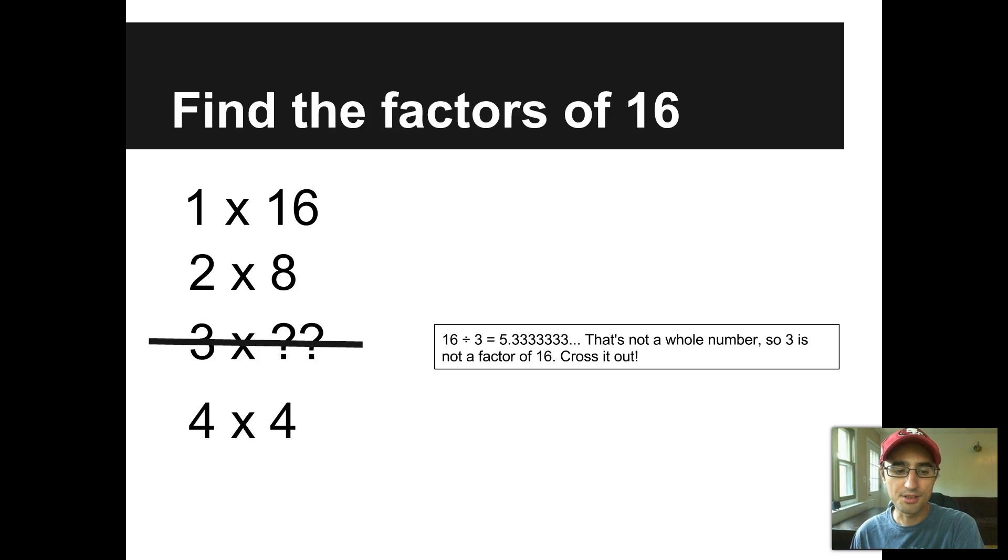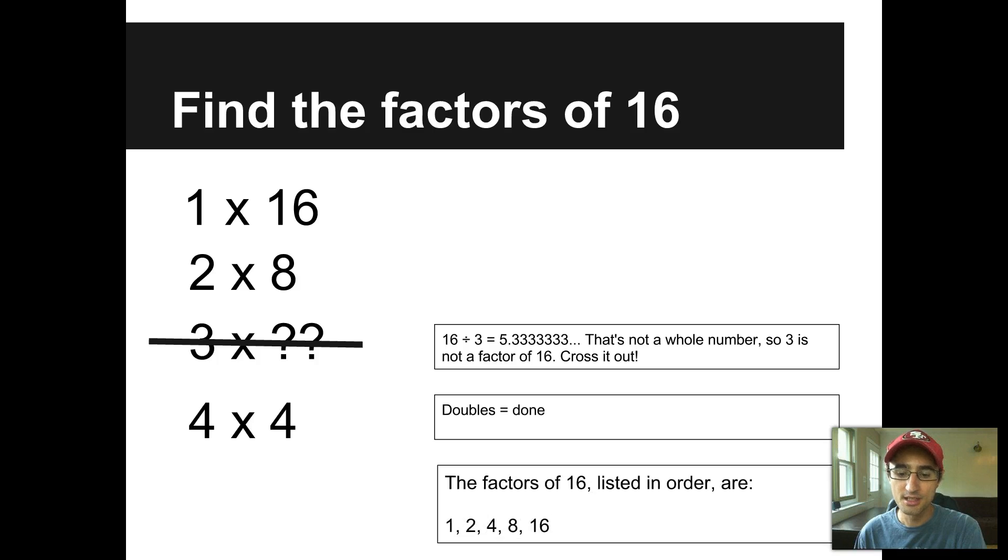And the next one after three is four. Four times four is 16. Now wait a minute. Did you notice something? I knew you would. That's right. Four times four is a pair of doubles. Doubles means we're done. Now we want to list those in order from least to greatest. So they are one, two, four, eight, and 16. Notice that there are only five factors of 16. One, two, four, eight, and 16. Got it? Easy, right? Well, let's do one more.